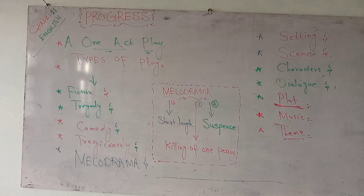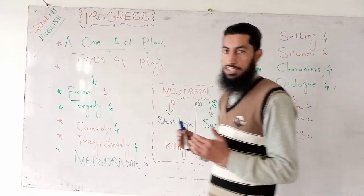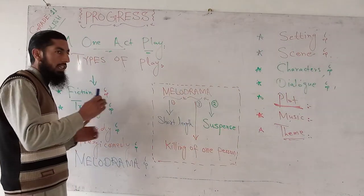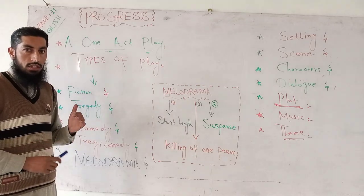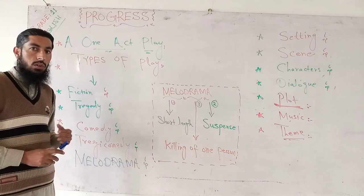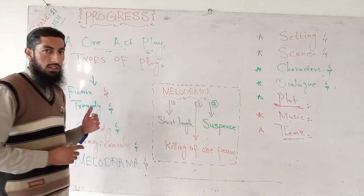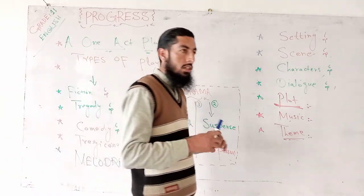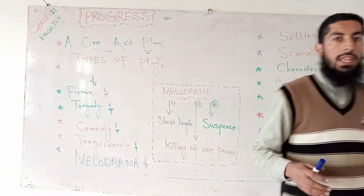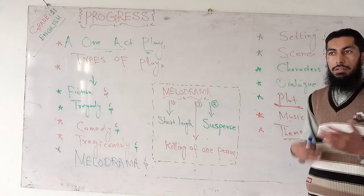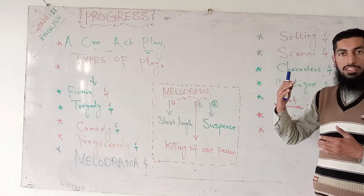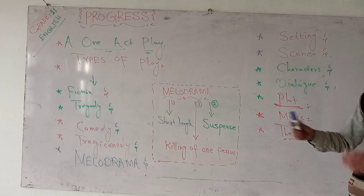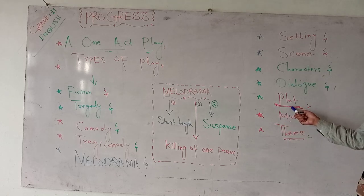Next comes plot. Plot is the sequence of events in the play. For example, the hero or heroine is born, grows up, does something extraordinary, reaches the climax, then falls down. So the sequence of events is called plot.